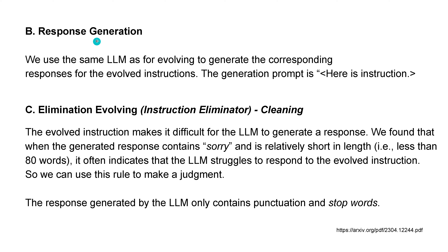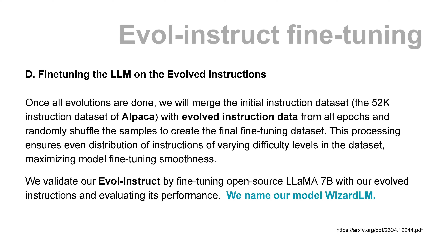Once we activate the prompts, GPT-4 gives us results back. We get all the prompts and their outputs, but sometimes GPT-4 hallucinates or produces nonsense. So we need to filter the results - an elimination evolving or cleaning procedure. When a generated response contains 'sorry,' is too short, has only stop words, or contains only punctuation, we delete it. This gives us a high-quality EvolveInstruct fine-tuning dataset.